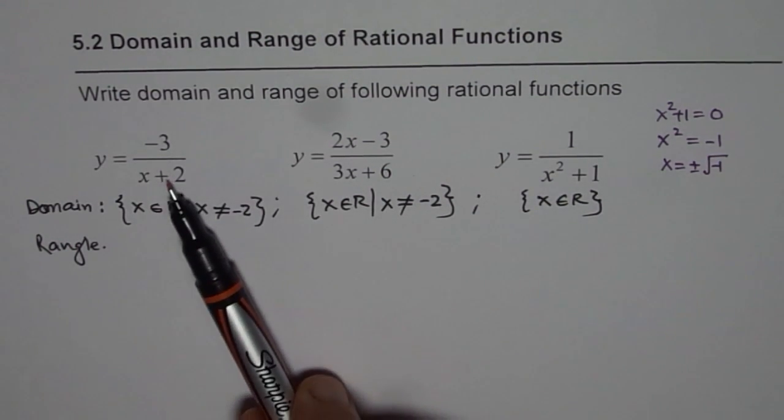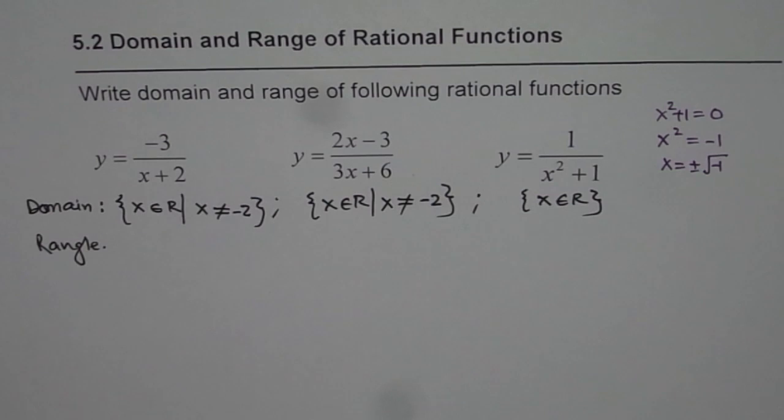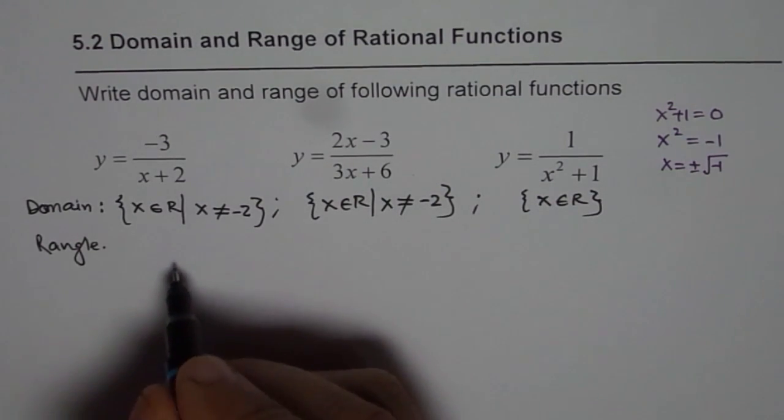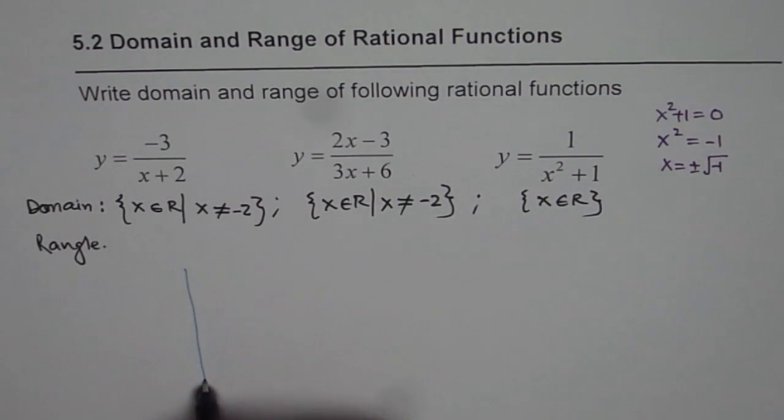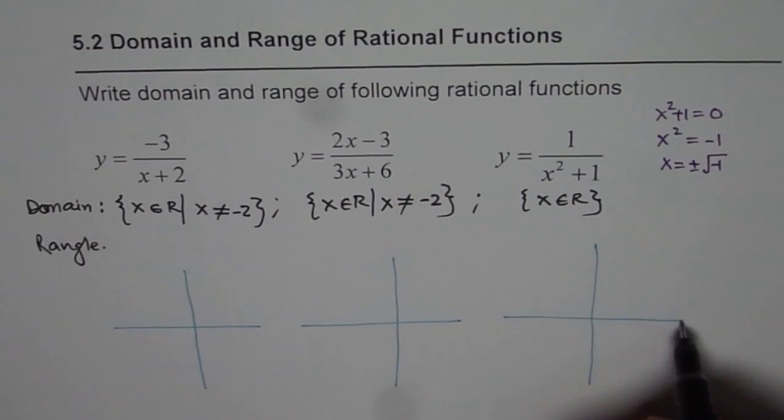As you know, this is kind of a reciprocal function translated. So this is simpler to sketch also and to write down the range for this particular function. So let's quickly sketch these functions. And then we will write down the range, okay?